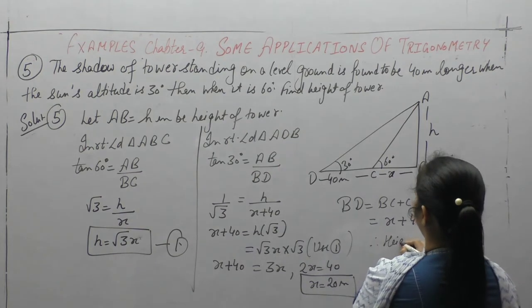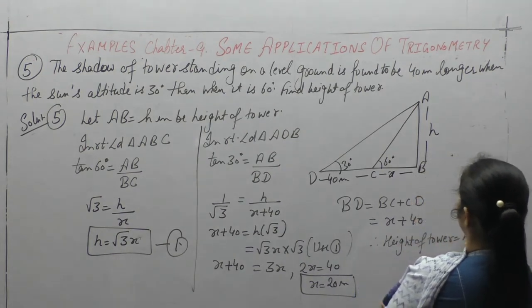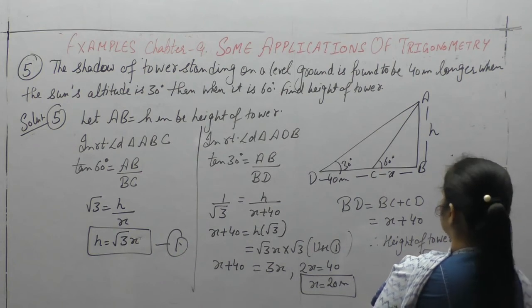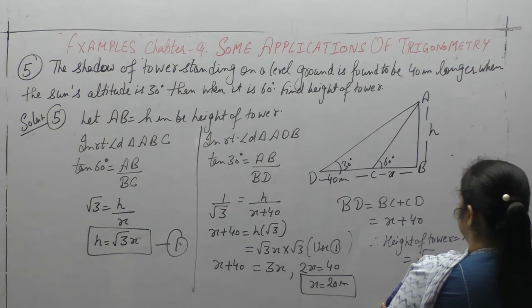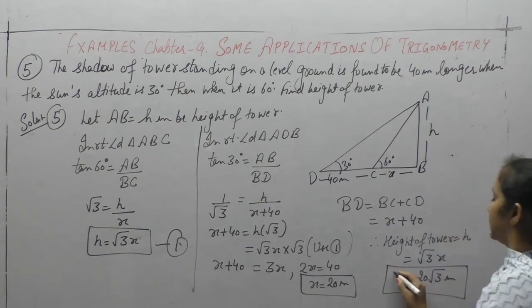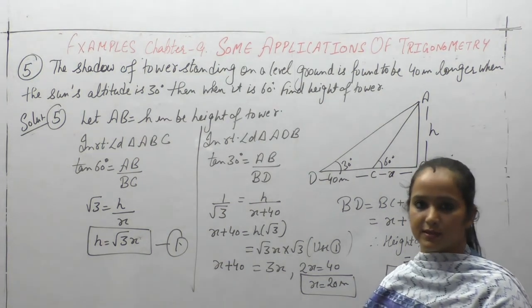Now therefore, height of tower equals h, root 3 into x. That is 20 root 3 meters. So this is the height of the tower, that is 20 root 3 meters.